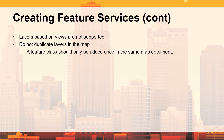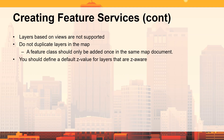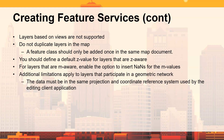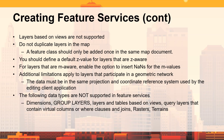Layers based on views are not supported. Do not duplicate layers in the map — I see this quite a bit where people add the same layer multiple times, maybe for symbology or rendering, but if you're creating a feature service for editing, you should only have that layer in the map once. You can define a default Z value for Z-aware layers. For M-aware layers, you can enable the option to insert nulls. If using geometric networks, your data must be in the same projection and coordinate system used by the editing client. Group layers are not supported as a data type for publishing.